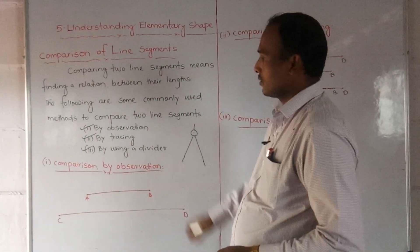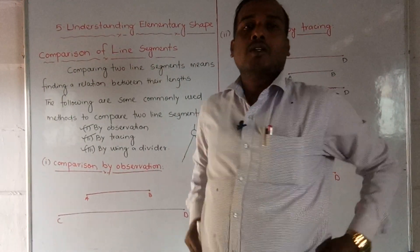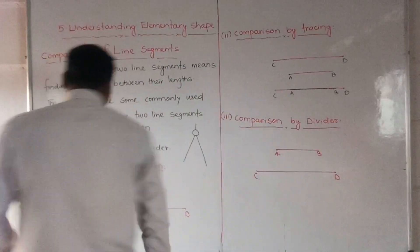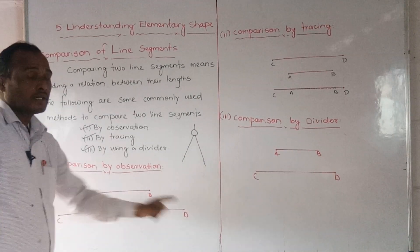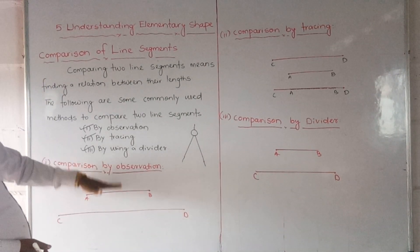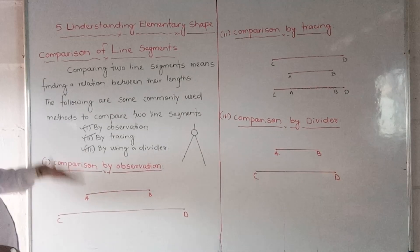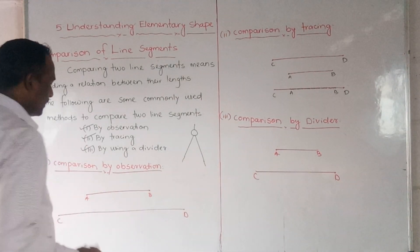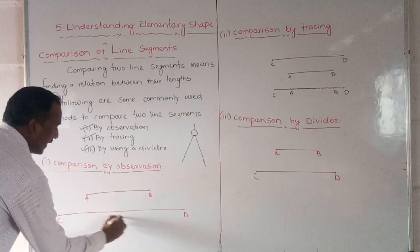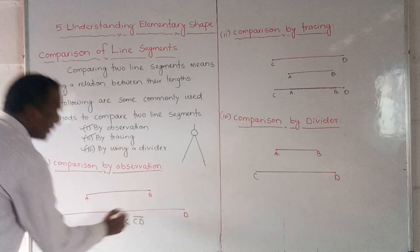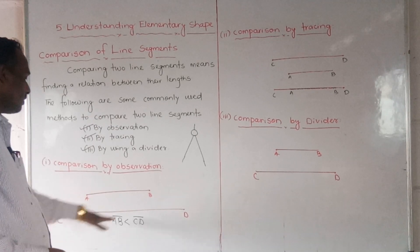First, let us try comparison by observation. We can see these two line segments — AB and CD. We can see how much length is smaller and how much length is greater. So we observe that line segment AB is smaller than line segment CD. By observation, we find that AB is smaller than CD.